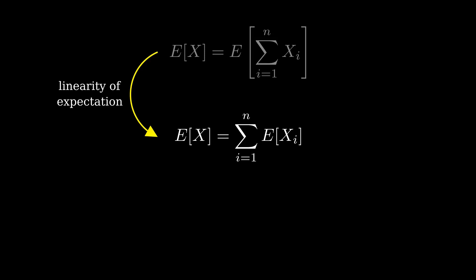So E of X being E of the sum of the students' X sub i's means that it's also the sum over the students of E of X sub i.